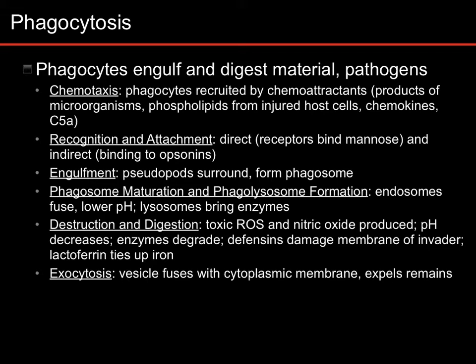Often in the immune system, this is going to be because there's a chemical signal, a chemokine, being secreted by some cell that's infected, or that was attacked, or that detected it, or something like that. There are lots of different chemokines, and C5A is one from the complement system.